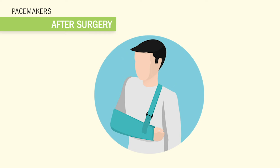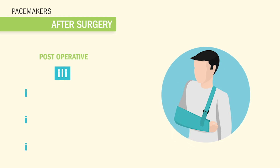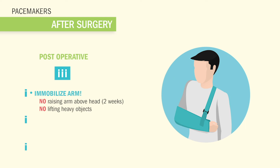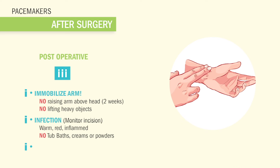Now let's talk about pacemakers after surgical implantation. Here are the top six most-tested things for the NCLEX and nursing tests, using the three I's. First I — immobilize the arm: there is a huge risk of electrode displacement, so always reposition the patient slowly and carefully, never raise the arm above the head for about two weeks, and avoid lifting heavy objects. Second I — infection: monitor for signs like redness, warmth, and inflammation at the incision site; no bathtubs, creams, or powders initially as these can irritate the new pacemaker. Third I — immediate post-op: inspect the heart rate and teach the patient to check their heart rate every day.